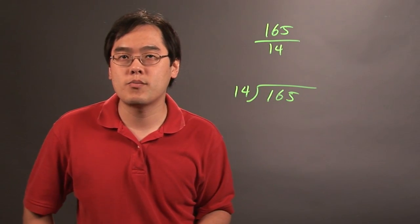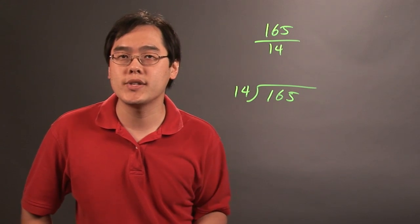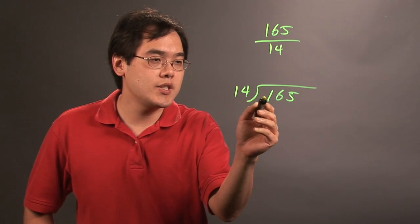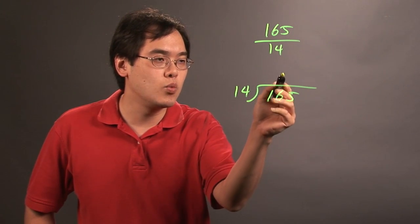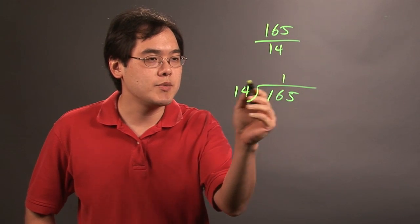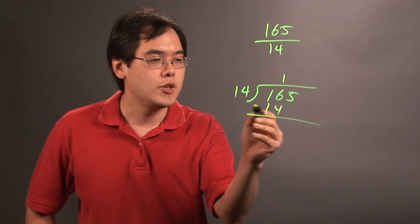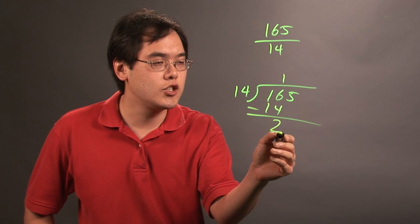So just treat it like you would a long division problem and the remainder will take care of itself at the very end. So 14 does not go into 1, but 14 goes into 16 once. So 1 times 14, that's going to be 14. Do the subtraction. 16 minus 14 is going to be 2.